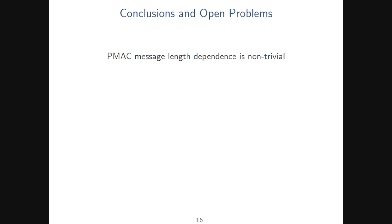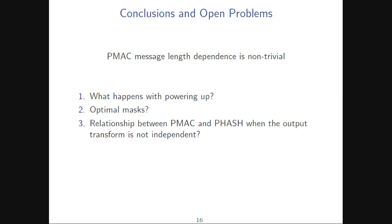PMAC message-length dependence is non-trivial. There are many open problems remaining: what happens with the powering-up instantiation, what are the optimal masks for PMAC, and if you have a collision in PHASH you have an attack on PMAC — but what about the reverse implication? If you have a PRF attack against PMAC, what does that mean for the masks? Thank you for your attention.